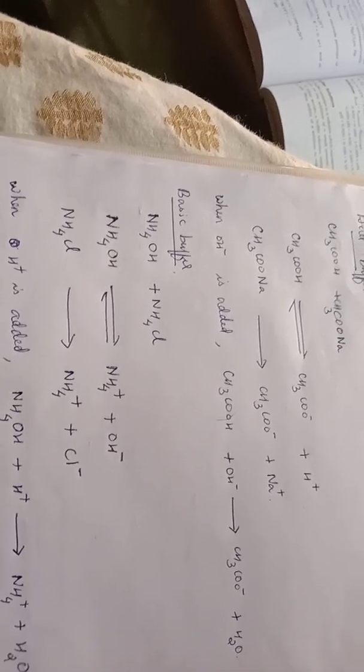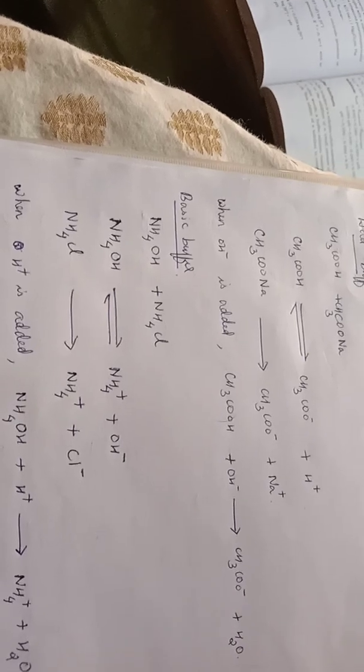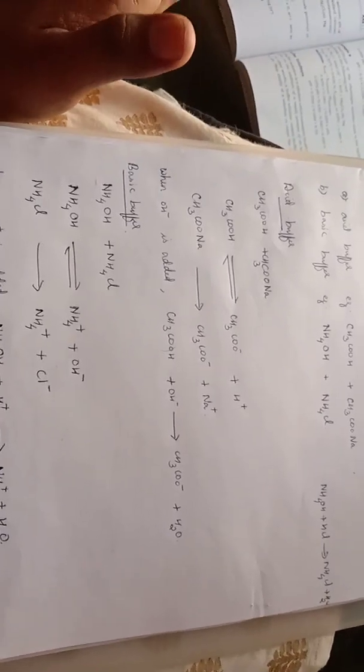The resistance to change in pH is the buffer action. In this case, we have explained the buffer action — if we add H plus or OH minus, it is neutralized and the pH change is minimal. We will explain more of this topic in the next video. Thank you.